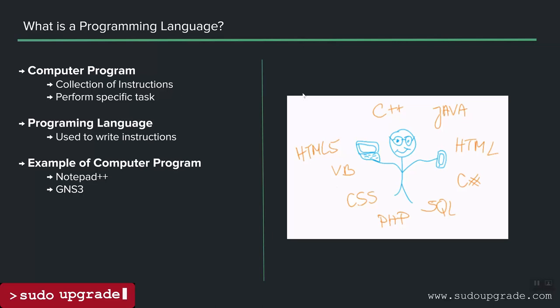Each programming language has its own strengths and weaknesses. In the next lecture when we focus on Python, I'll explain what an interpreter is and the difference between an interpreted language versus a compiled one like C++. A computer program is simply a collection of instructions supposed to do a specific task, and programming languages are used to write those instructions. Examples include applications like Notepad++ or GNS3 — when you click something, it tells the computer to perform a particular task.